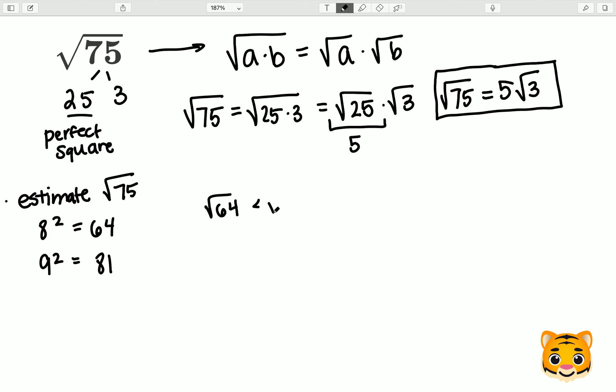Therefore, we can write the following inequality. The square root of 64 is less than the square root of 75, which is less than the square root of 81.